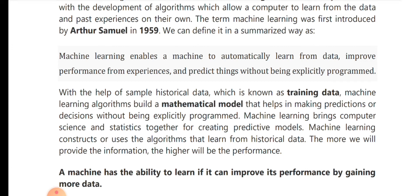With the help of sample historical data — which is also called training data or old data — we actually train the model. The Machine Learning Algorithm builds a Mathematical Model. What do we do with the training data? We create a mathematical model that helps in making predictions or decisions without being explicitly programmed.